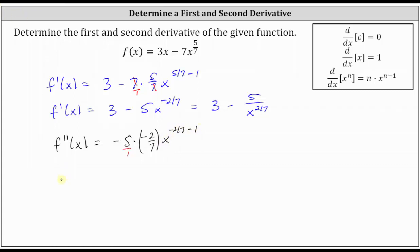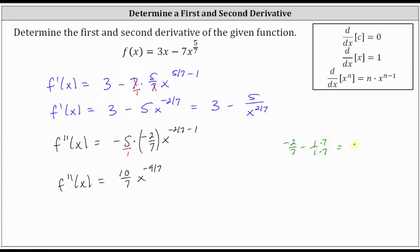Simplifying, we have f double prime of x is equal to — nothing simplifies here — we just have positive ten-sevenths. x to the power of negative two-sevenths minus one gives us x to the power of negative nine-sevenths. Negative two-sevenths minus one is equivalent to negative two-sevenths minus seven-sevenths, which does give us negative nine-sevenths.